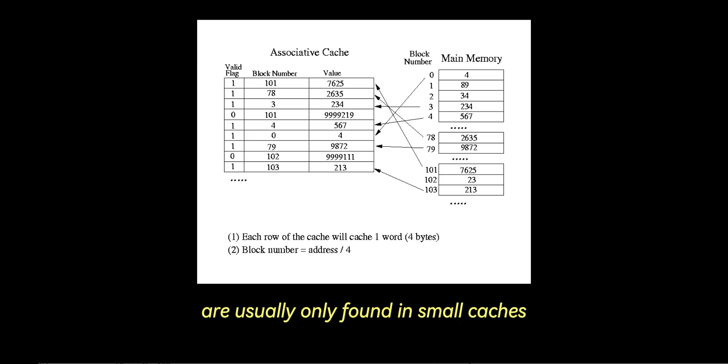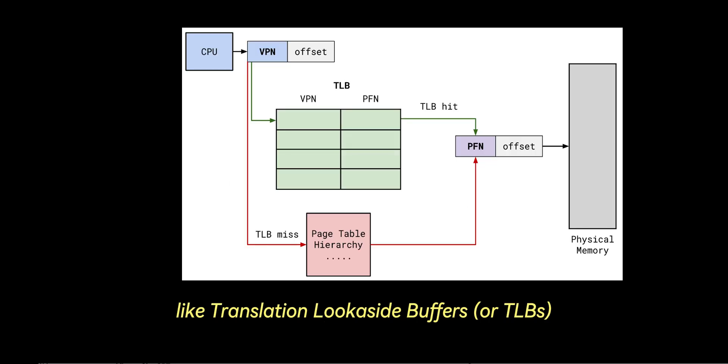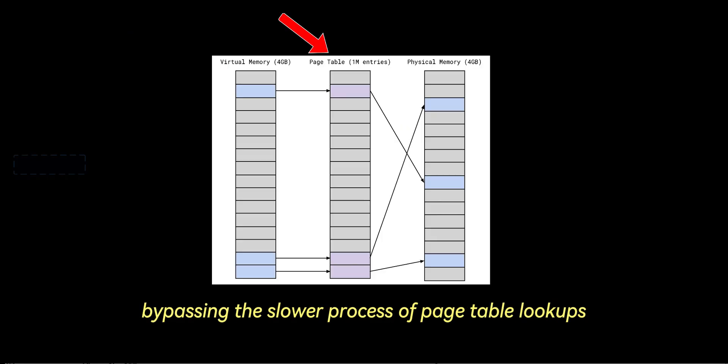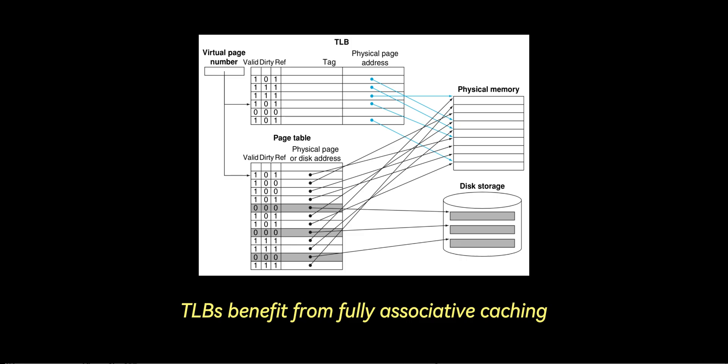Fully associative caches are usually only found in small caches like translation lookaside buffers or TLBs. A translation lookaside buffer is a specialized cache used in modern CPUs to quickly translate virtual memory addresses to physical memory addresses, bypassing the slower process of page table lookups. TLBs benefit from fully associative caching because virtual to physical address mappings are highly unpredictable, so the flexibility of allowing any entry to map to any cache line maximizes the hit rate. Given that TLBs typically store only a few dozen to a few hundred entries, the complexity of fully associative search is manageable, ensuring fast address translations critical for memory access performance.